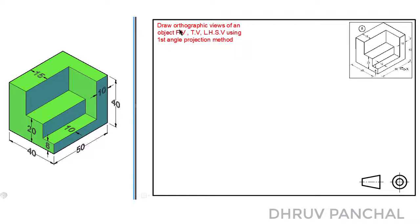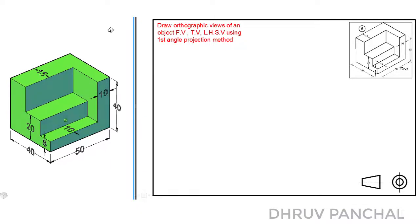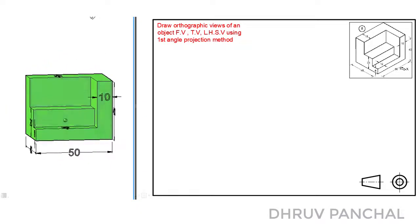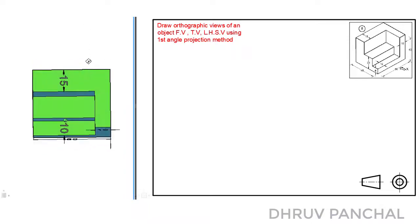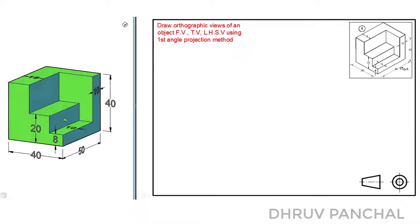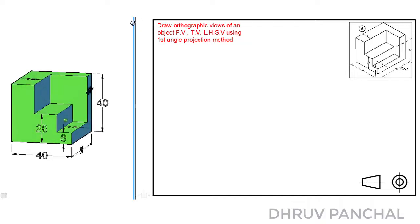Here is our data for the problem: draw orthographic views of an object — front view, top view, and left hand side view — using first angle projection method. To solve this problem, let us see the different views of this 3D object.